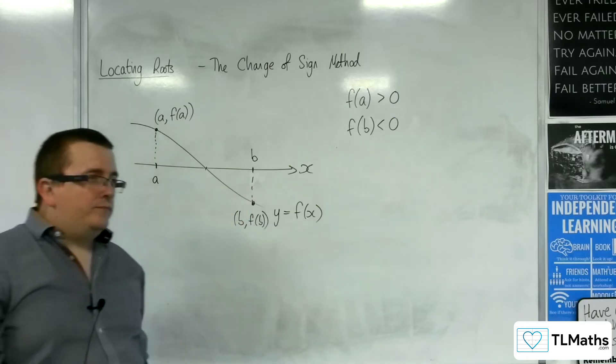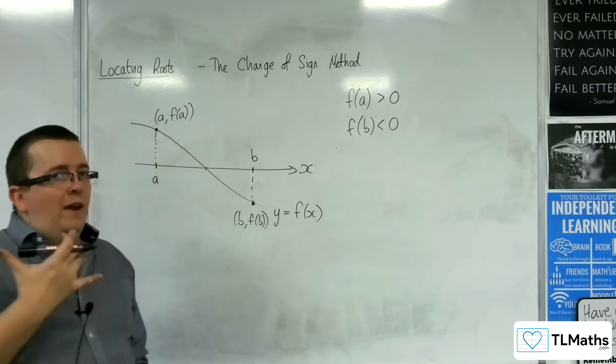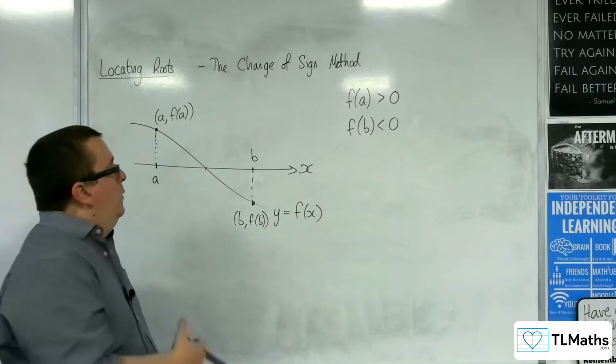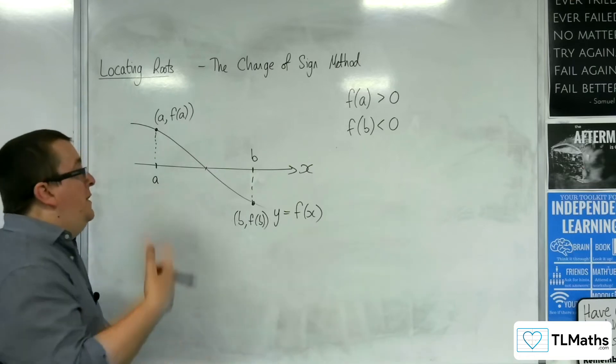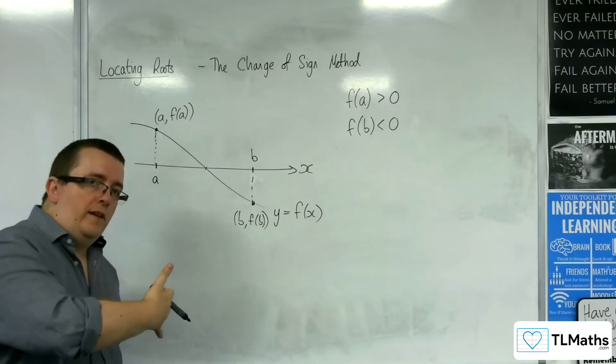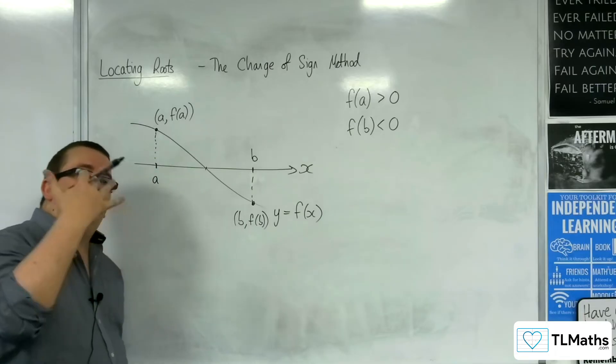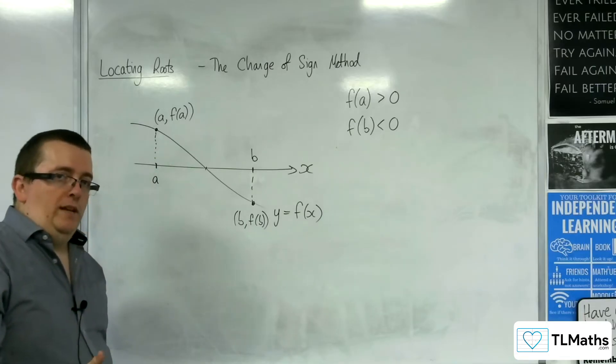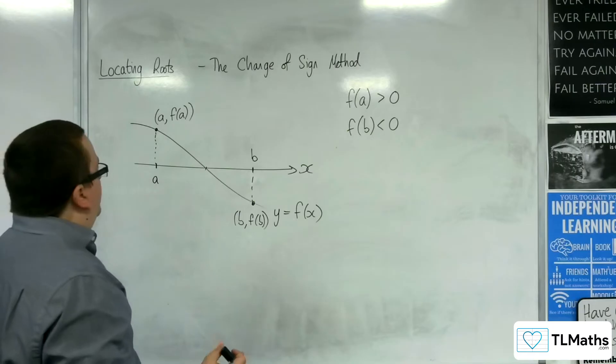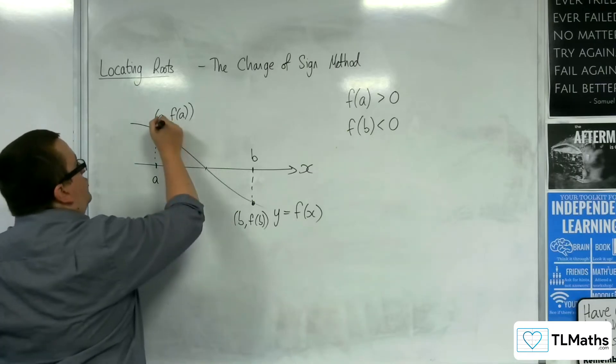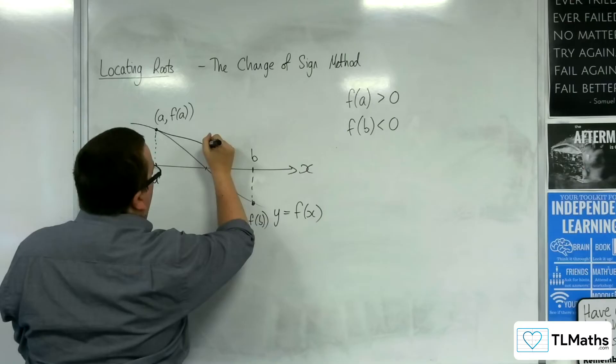Now that's not enough. What is also important and what's inferred by the way that I've drawn the curve is that the curve is continuous between those two points. Because I could quite easily have just said, right, it looks like this up to this point.